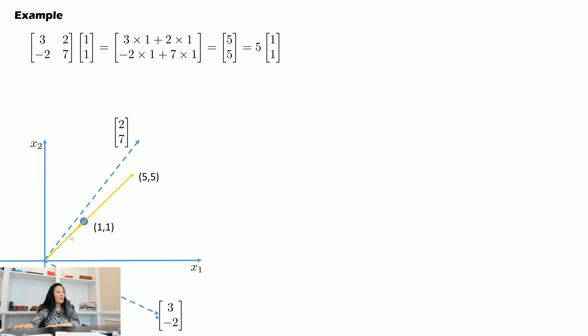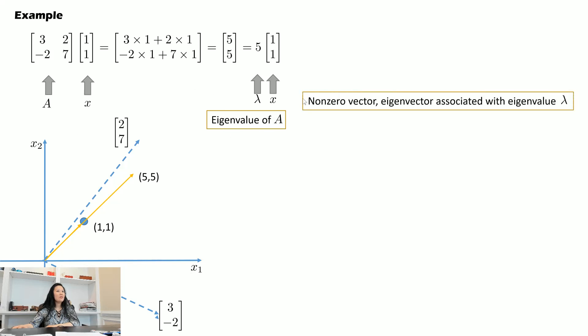Once we do that, however, there are vectors that do not change direction when we move them to the new coordinate system, and this is the vector (1, 1). So what does it mean? Let me note this information. The matrix is A, the vector is x, and λ is the scalar. We're going to say that λ is the eigenvalue of matrix A, and x is the eigenvector associated with eigenvalue λ.